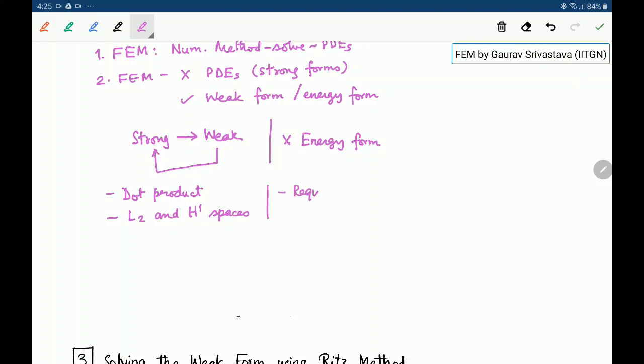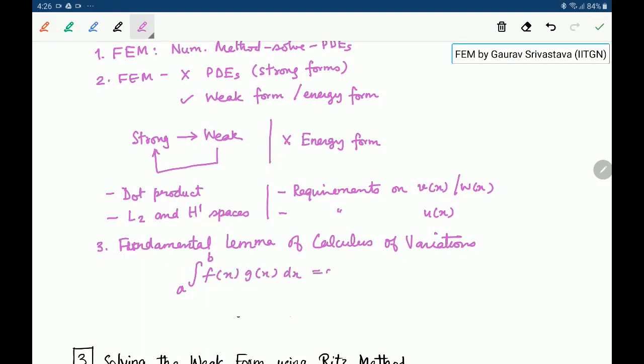We have also seen what are the requirements on V or W and on U of X. One very important lemma which we have learnt was the fundamental lemma of calculus of variations, which basically says integral a to b f(x)g(x)dx equal to 0 implies that F of X is identically equal to 0 if G of X is an arbitrary function and F of X is a given function.